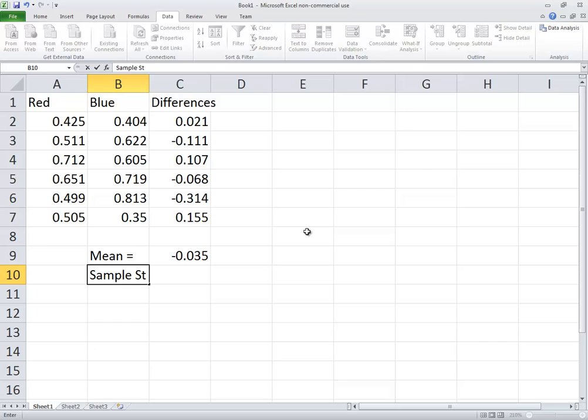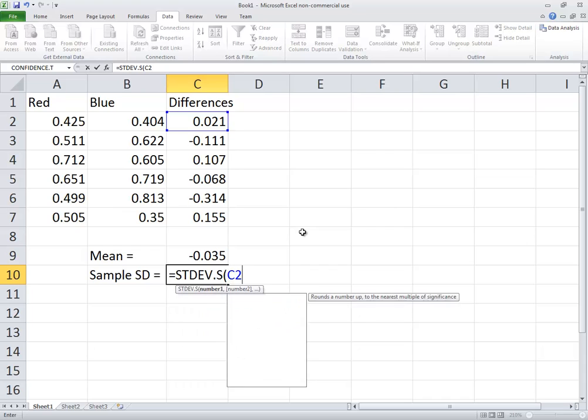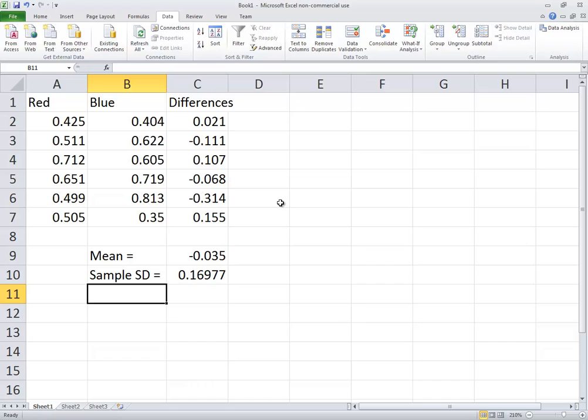And we also need our sample standard deviation. So I'm going to do equals standard deviation. And I want to choose the standard deviation dot S for sample. Does beginning parentheses, and then I'll do C2 colon C7, and then closing parentheses.